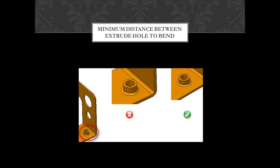Minimum distance between extruded hole to bend: A certain distance must be maintained between the extruded hole and bend to avoid metal deformation and fracturing. It is recommended that the minimum distance between the extruded hole and bend should be three times the thickness of the sheet metal plus the bend radius.